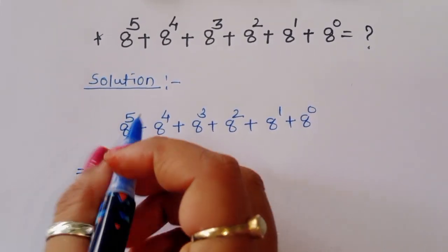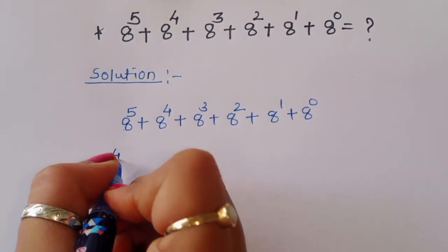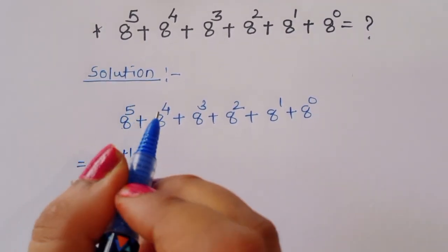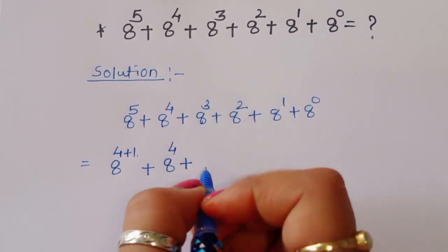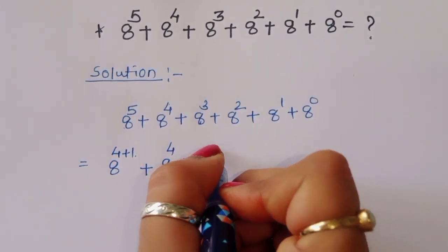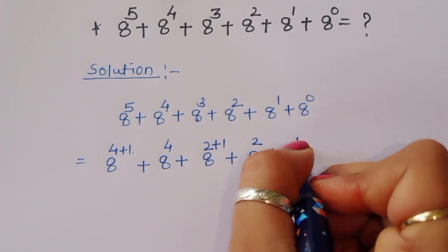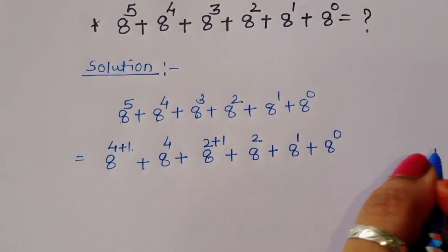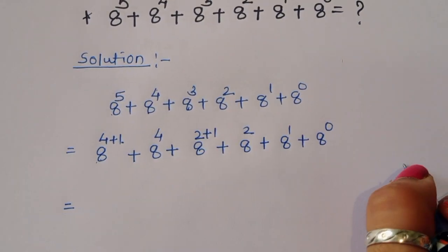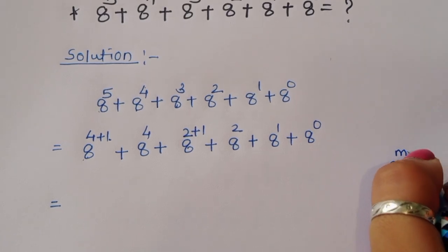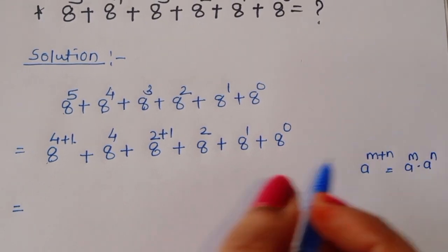So we can write 8 power 5 as 8 power 4 plus 1. That gives us 8 power 4 plus 1, plus 8 power 4, plus 8 power 3, which we can write as 8 power 2 plus 1, plus 8 power 2 plus 8 power 1 plus 8 power 0. The formula we use is: a power m plus n equals a power m times a power n.